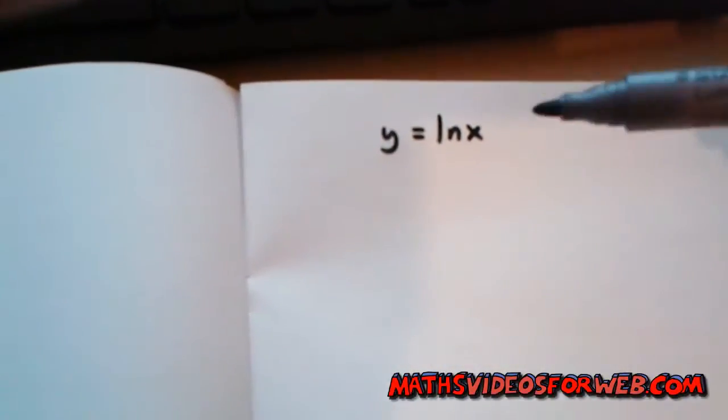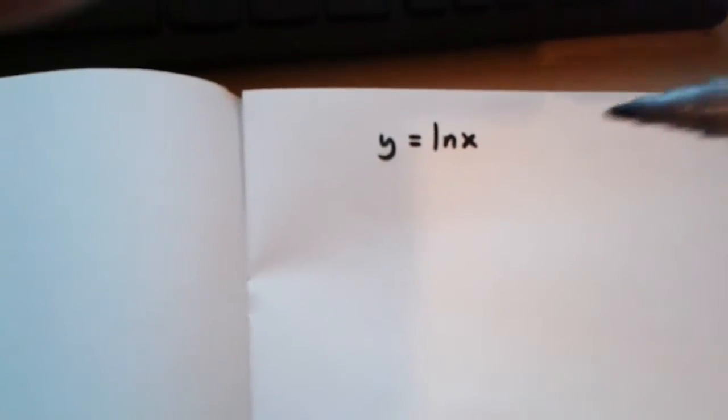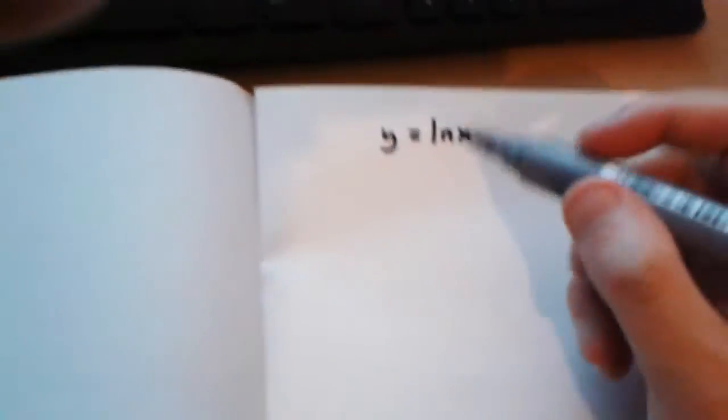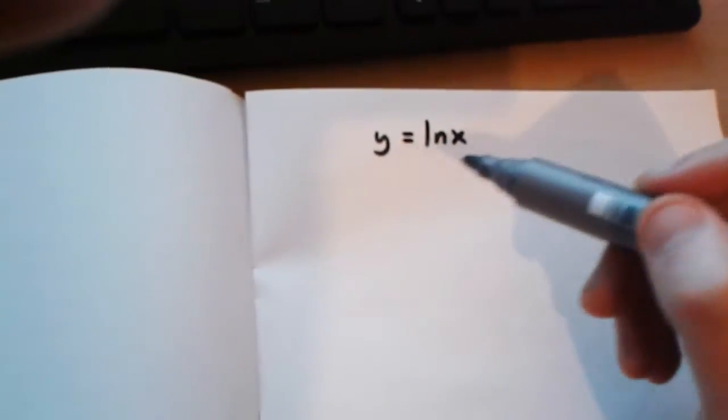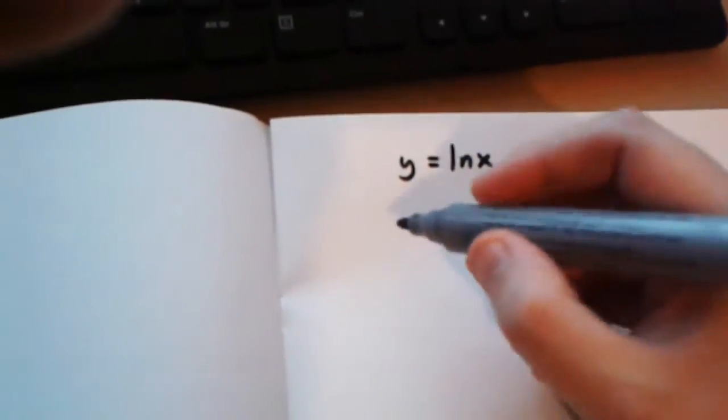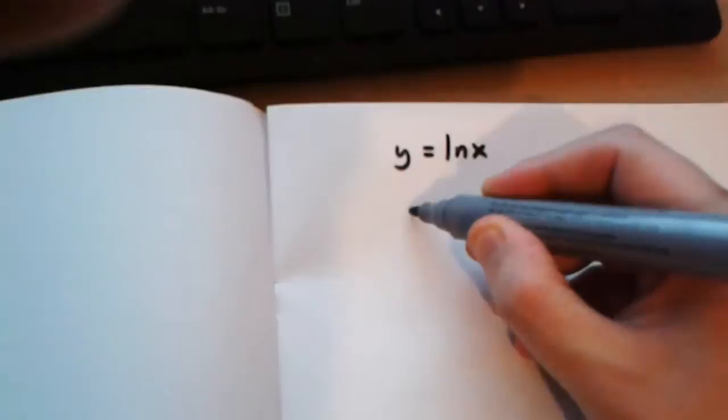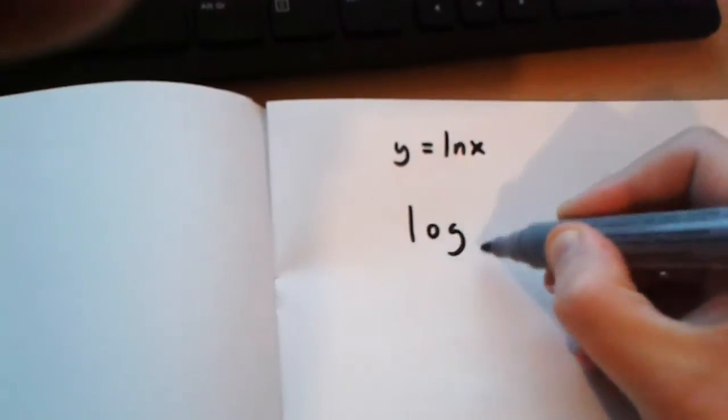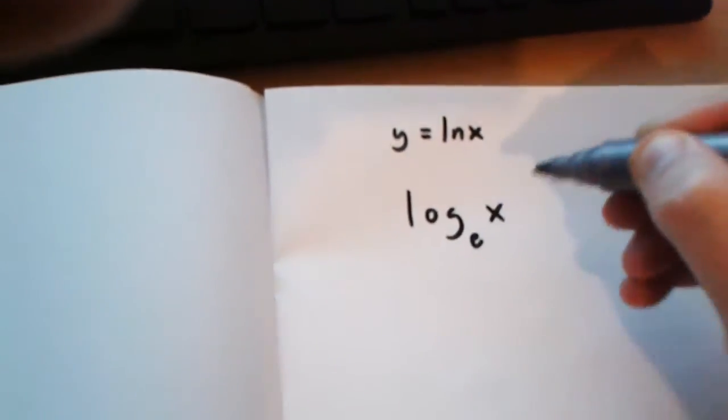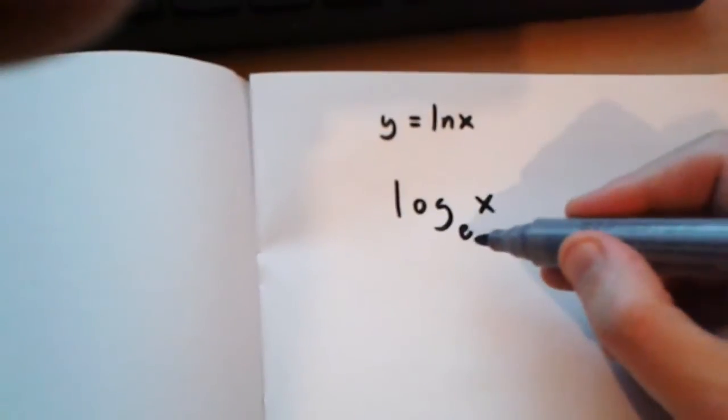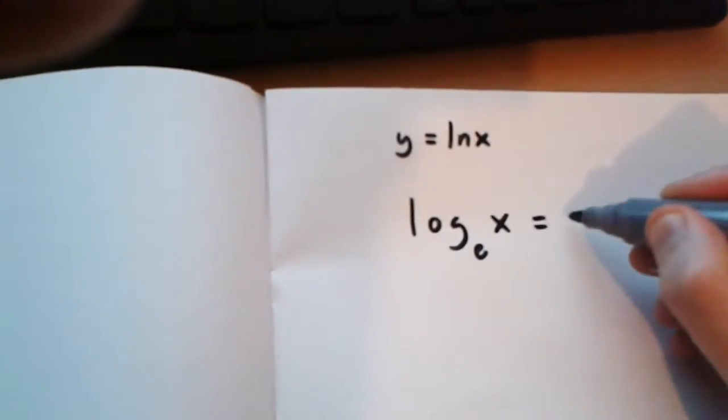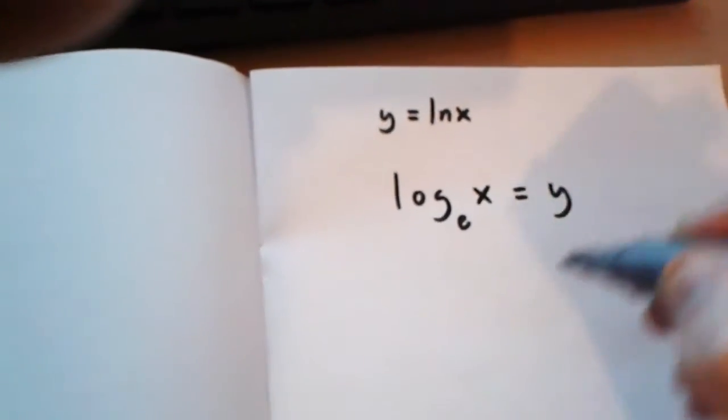Hi, in this video I'll be showing you a new way to differentiate y equals ln x. To differentiate y equals ln x, you first have to say that the logarithm of x to the base e is equal to y.